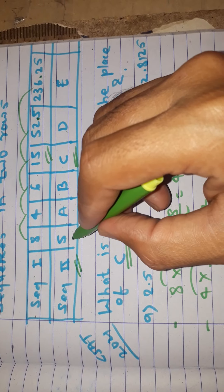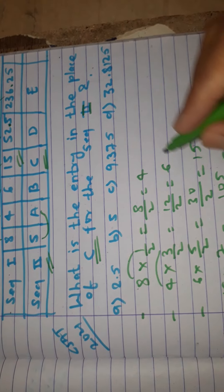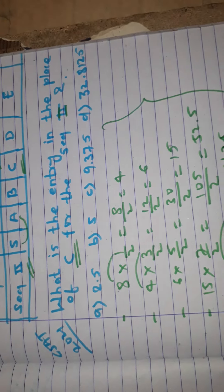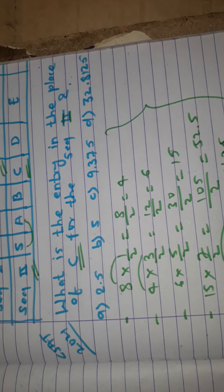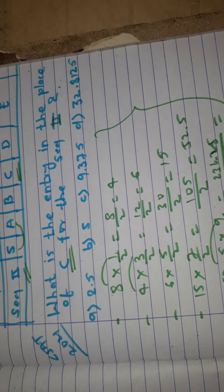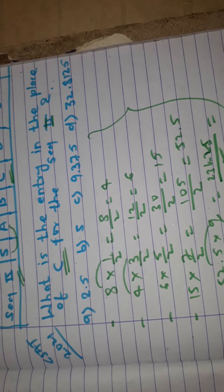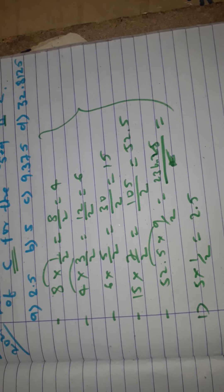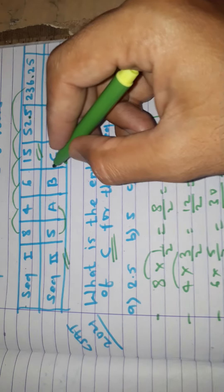We apply the same sequence pattern to sequence 2. First, 5 into 1/2 equals 5/2, which is 2.5. This is the first value, a.